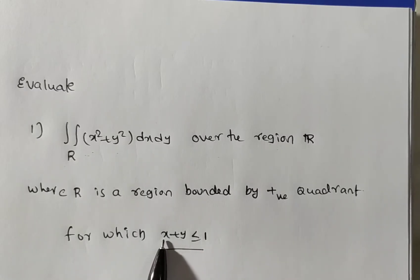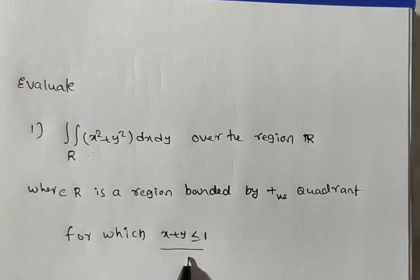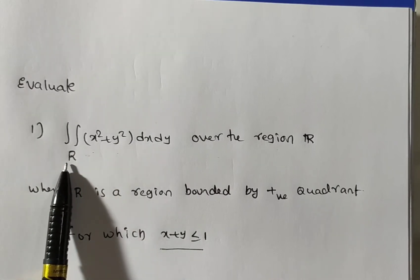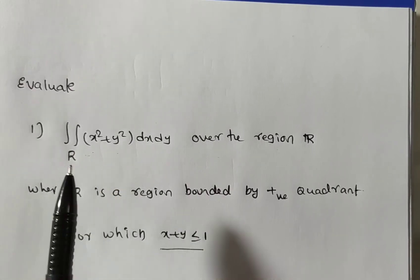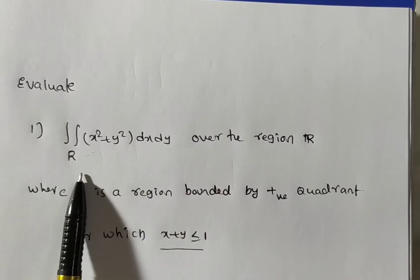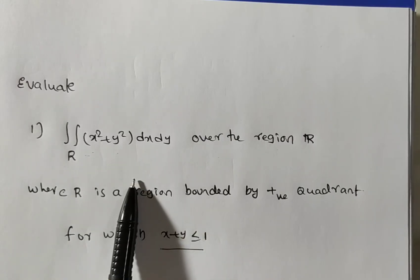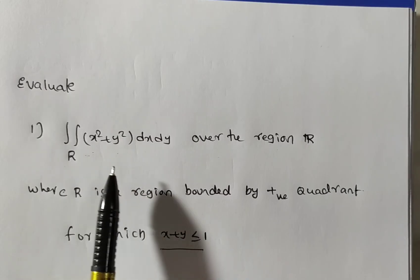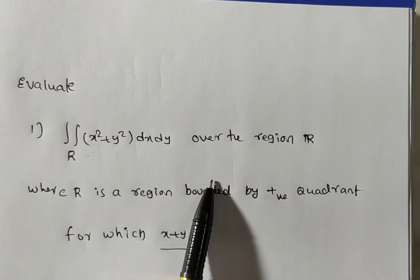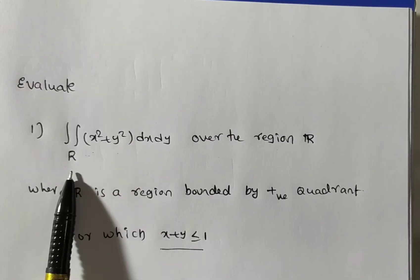By the observation of this problem, double integral over R is given where R is bounded by this region. Are the limits given for this R? No. So we have to find out the limits. In the previous video we solved problems where limits were given for x and y. In type 1, both x and y limits are independent. In type 2, x limit is independent and y is a function of x, or y is independent and x is a function of y. Now in type 3, they are giving only the region, not the limits.